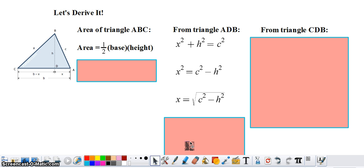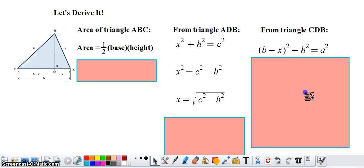Now let's take a look at triangle CDB. Again, having a height means that this triangle is a right triangle. For this triangle, I once again need you to write an equation using the Pythagorean theorem. If you have that b minus x squared plus h squared equals a squared, then you are correct.